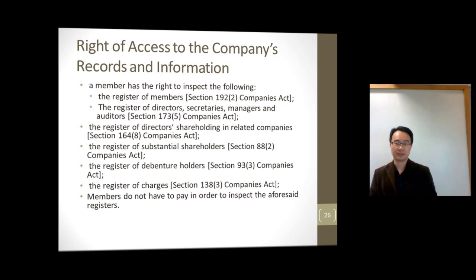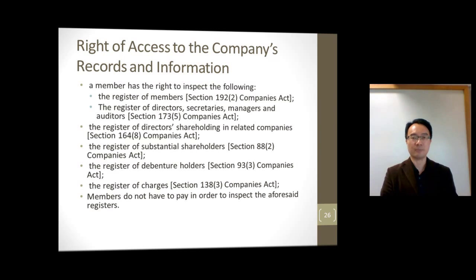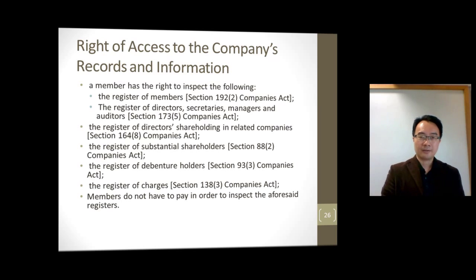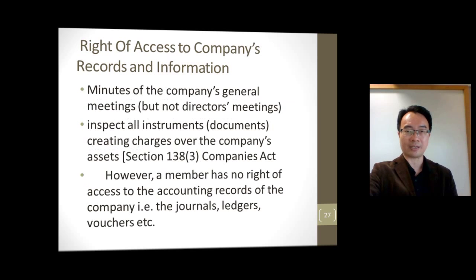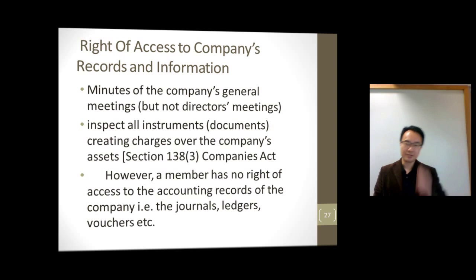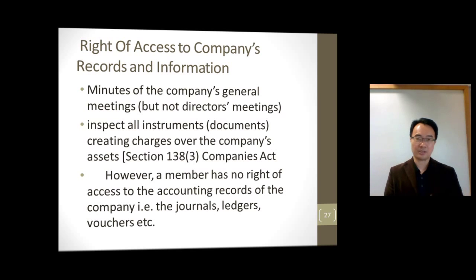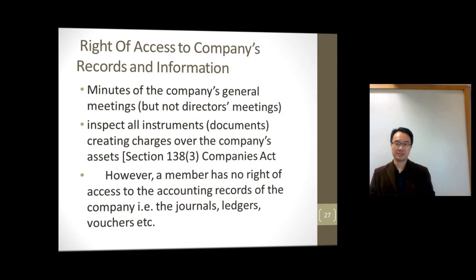The third right is that the member has the right to access information. You can obtain certain documents like the register of members, register of directors, and register of shareholding — and you don't have to pay. You can access all of this to find out what the company is doing. You can also access general meeting minutes and instruments creating charges.